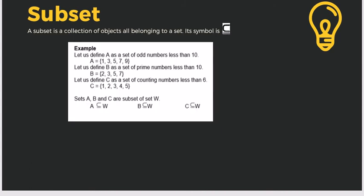We have the subset. A subset is a collection of objects all belonging to a set. For example, let us define A as a set of odd numbers less than 10. So the set A = {1, 3, 5, 7, 9}. This is considered a subset because it is still included within the set of numbers less than 10 — we are just taking the odd numbers. Let us define B as a set of prime numbers less than 10, so B = {2, 3, 5, 7}. These are considered a subset because they are still under the whole numbers.